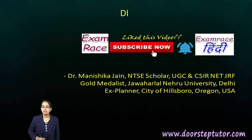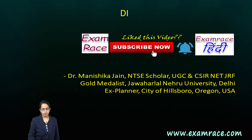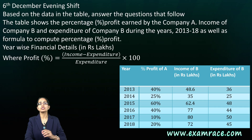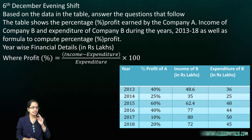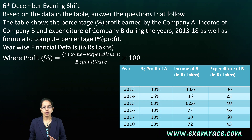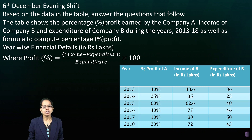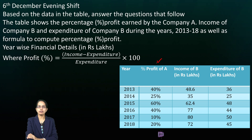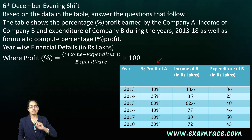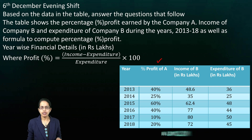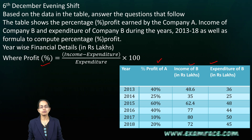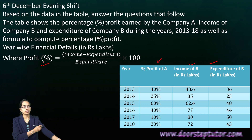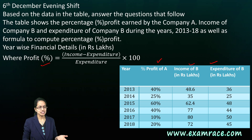Let's talk about some of the most important questions from data interpretation. DI was relatively very simple. The first question we would cover was based on profit percentage. For company A, the profit percentage was given, and for company B, the income and the expenditure were given, along with the formula. So nothing much to do — simply apply the formula and find out the values for the given questions.